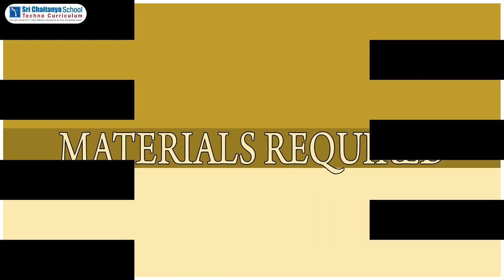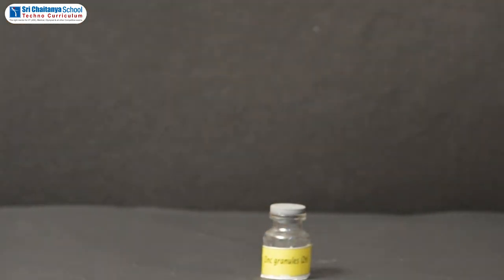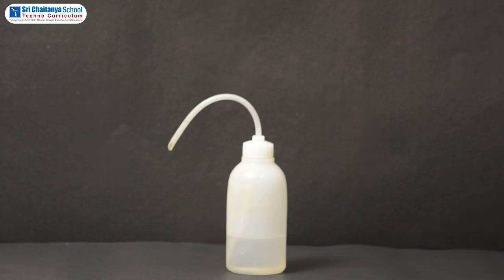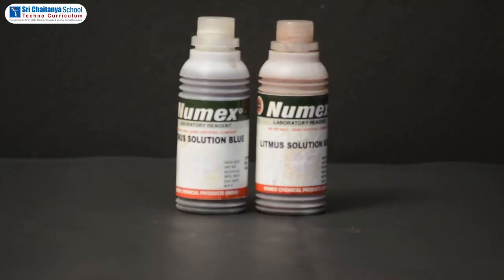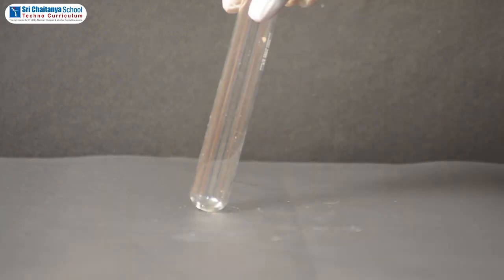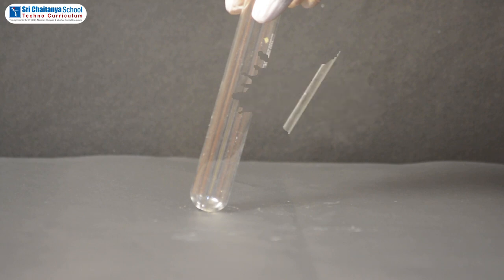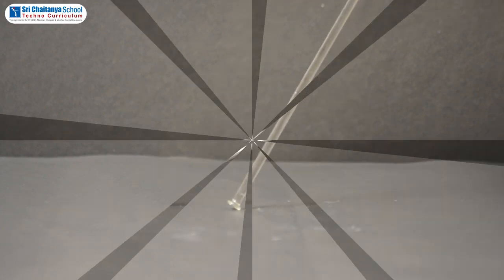The materials that are required: zinc granules, distilled water, sodium carbonate, litmus solutions both red and blue, test tube holder, boiling tubes, glass rod, and a thistle funnel.